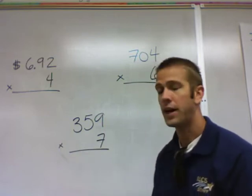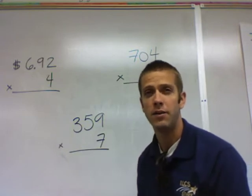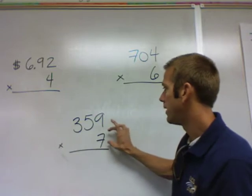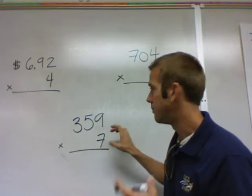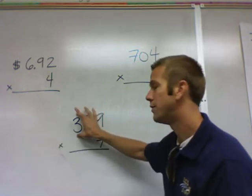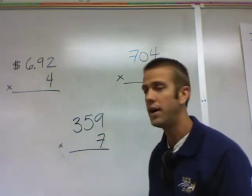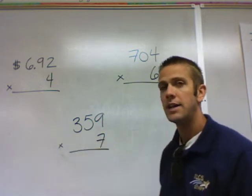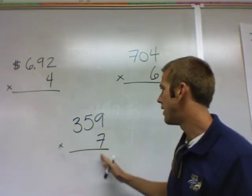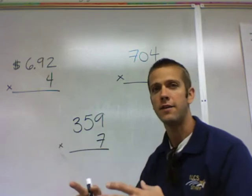When you do multiplication, you multiply to each place value. You'll be multiplying the bottom single-digit number times the ones column, then times the tens column, then times the hundreds column. Seven times 359 is like saying seven three hundreds, seven fifties, and seven nines, and then adding it all together.